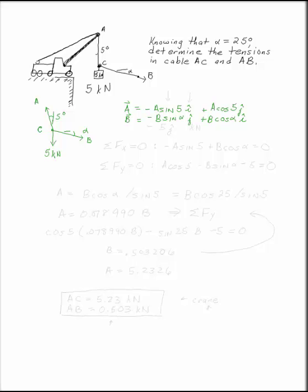Notice that since the 5 and the alpha are with respect to the horizontal and the vertical, if your sines line up, then your ij's don't. And the last force we have is just minus 5j kilonewtons.